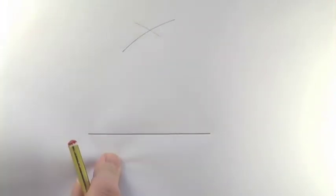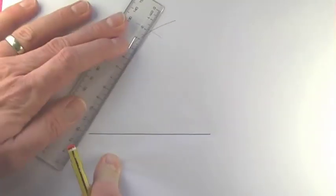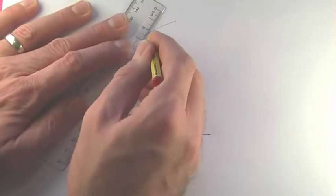I then need to draw a line with a ruler from each end of the line to the point where the two arcs cross.